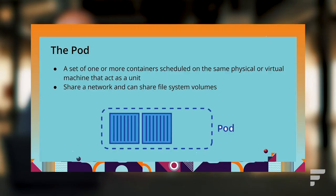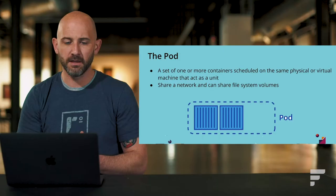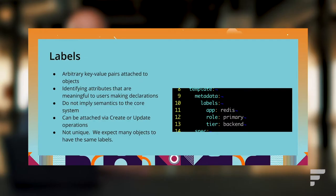The first primitive is the pod. A pod is a set of one or more containers scheduled on the same physical or virtual machine that act as a unit. When creating a pod declaration, you define any number of containers inside it. Pods share a network internally — there's a private network shared among all containers in the pod. They can also share filesystem volumes, similar to Docker volumes, allowing containers within a pod to share ephemeral or copy-on-write style storage.